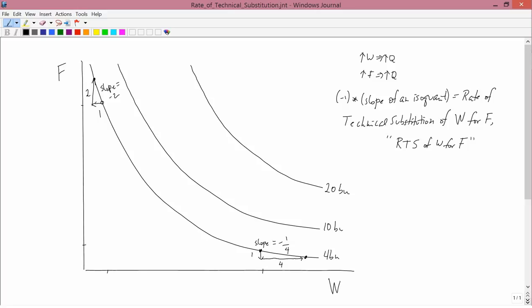Now let's see what the rate of technical substitution is. So the rate of technical substitution is minus the slope of the isoquant. So the rate of technical substitution here is plus 2. And the rate of technical substitution here is plus 1 quarter.